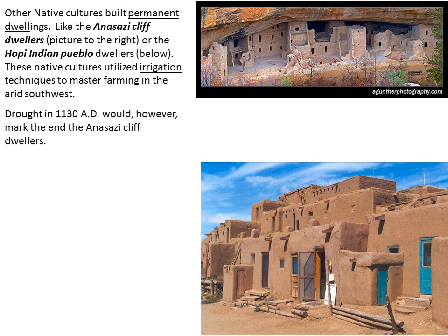Some Native cultures before European contact also lived in permanent dwellings — the famous Anasazi cliff dwellers and the Pueblo Indians of the Southwest. These cultures had declined from their height by the time of contact with Spanish Americans. The Spanish tried to exert control over Native Americans in New Mexico and forcibly convert them, and the Native Americans in places like Pueblo revolted in one of the most impressive anti-colonial revolts in early America.